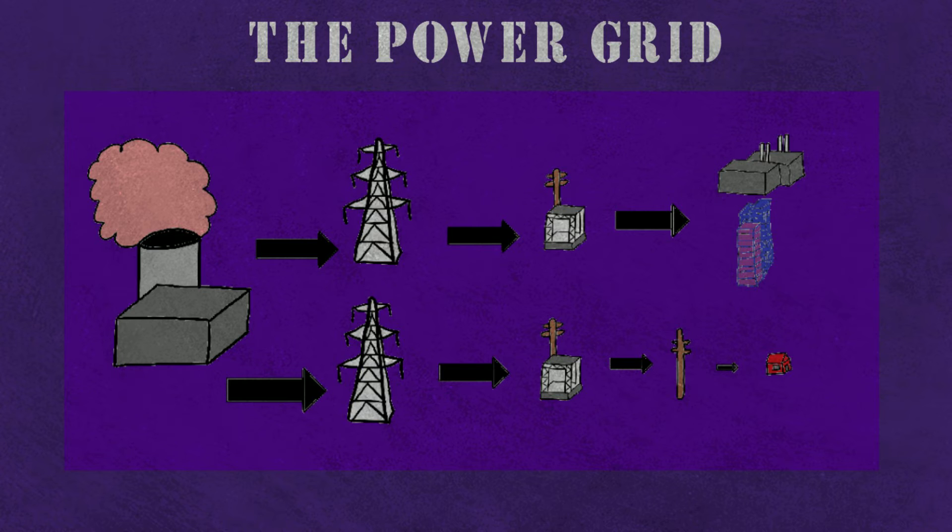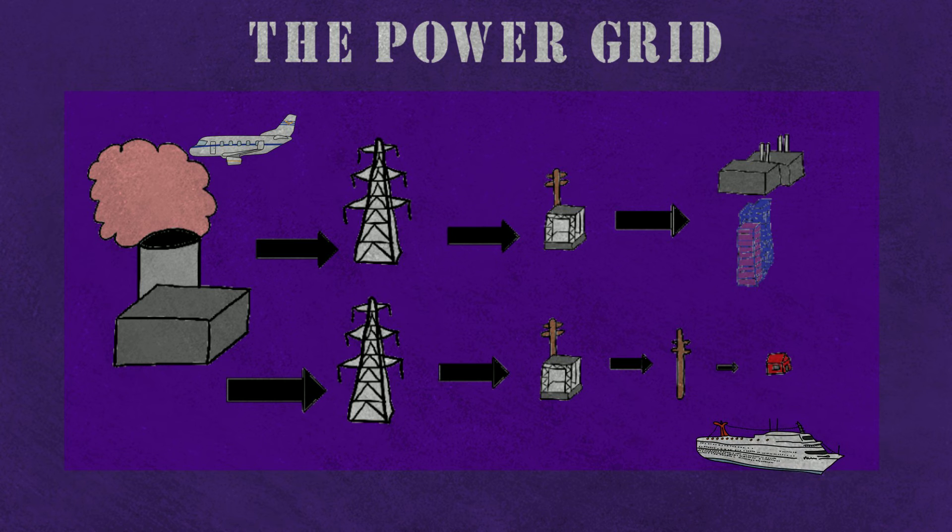Other systems include off-the-grid networks that provide power for certain areas, a smart grid which is basically a grid of the future with feedback and other forms of energy, or even systems that have their own distribution such as planes or ships.